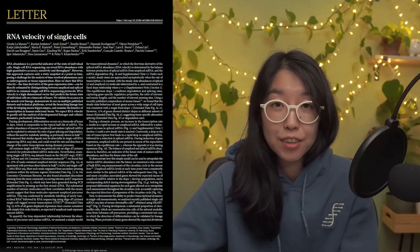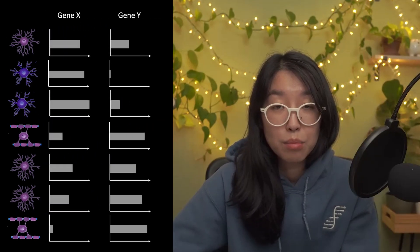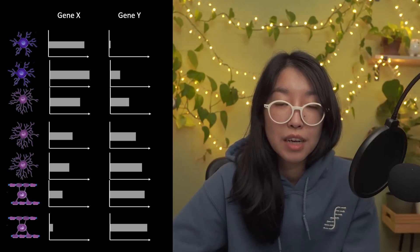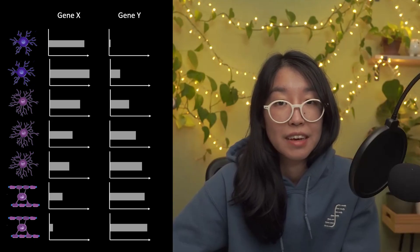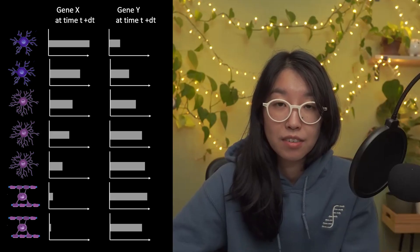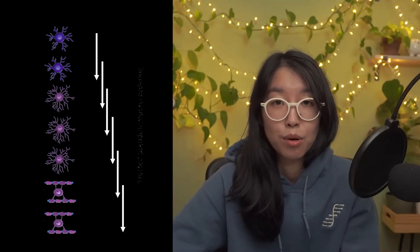That is, you can infer something about the future positional information of each friend based on the current observed positional information of the other friends. This is the general intuition behind RNA velocity, which is defined as the time derivative of a cell's gene expression state. Instead of having each friend represented by their positional information, we have cells represented by their gene expression measurements. And again, we can use this gene expression information to create a lower dimensional pseudotemporal ordering of our cells, and we'll aim to use RNA velocity analysis to predict the future gene expression state of individual cells on the timescale of hours, which will also help us assign a directionality to the pseudotemporal ordering in time.